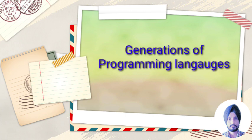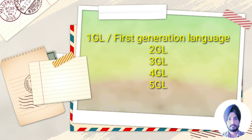Now we will discuss the generations of programming languages. There are five generations: 1GL — first generation language, 2GL — second generation, 3GL — third generation, 4GL — fourth generation, and 5GL — fifth generation language. 5GL is the latest programming language.